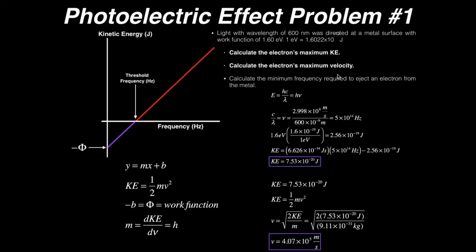Now we're asked to calculate the electron's maximum velocity, given the kinetic energy we just found. Kinetic energy is given by one half times the mass times the square of the velocity. The mass is the mass of an electron, 9.11 times 10 to the minus 31st kilograms. Rearranging and solving for velocity, we get: velocity equals the square root of 2 times the kinetic energy divided by the mass.